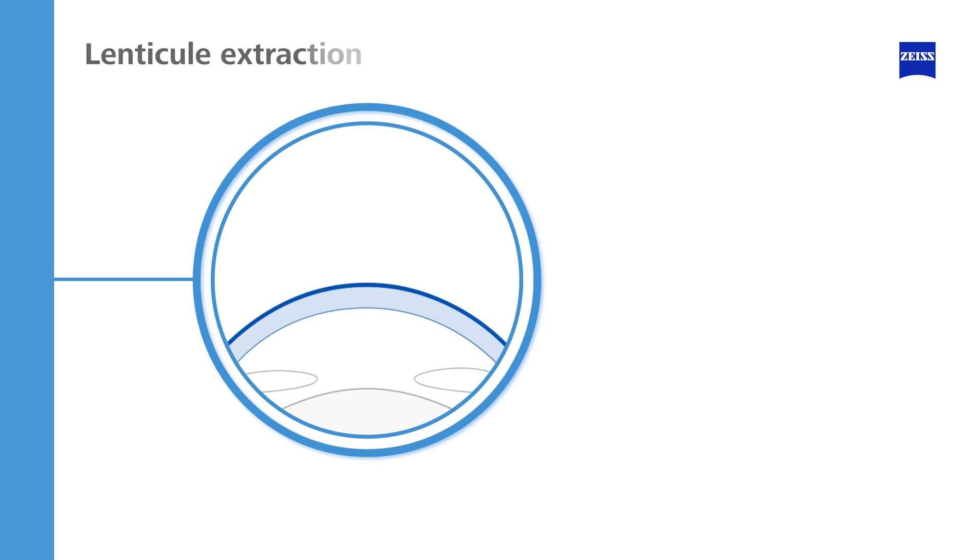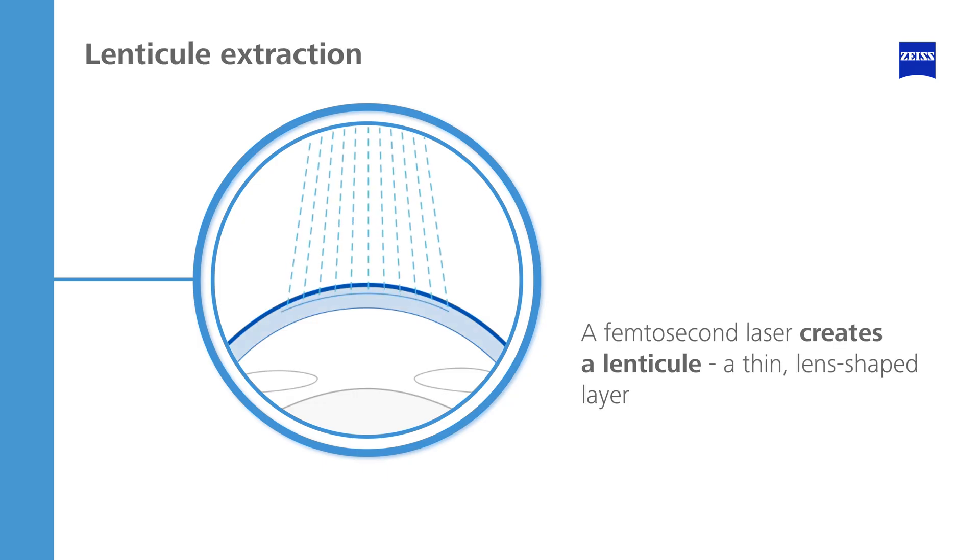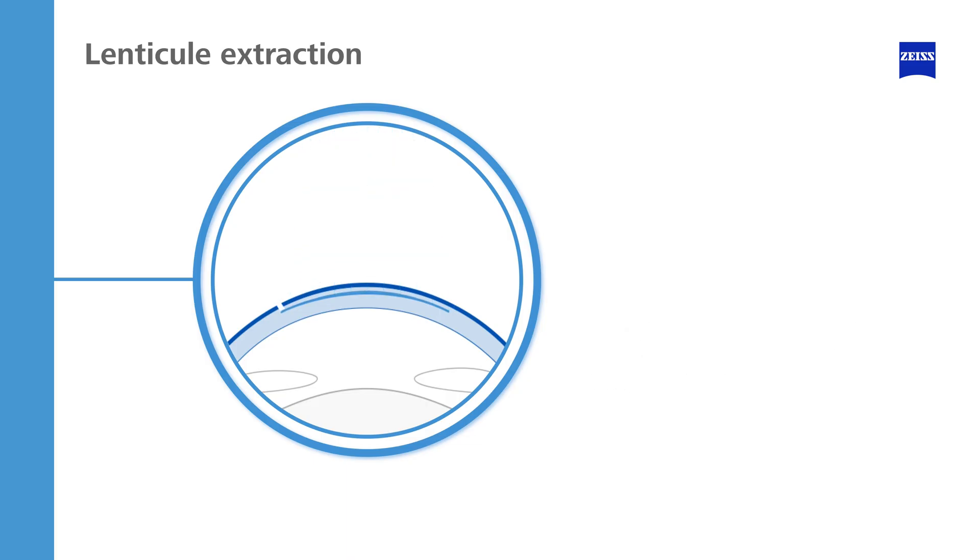With lenticule extraction, a femtosecond laser creates a lenticule, a thin lens-shaped layer just beneath the surface of the eye. Then the lenticule is removed via a tiny opening on the cornea, correcting your vision.